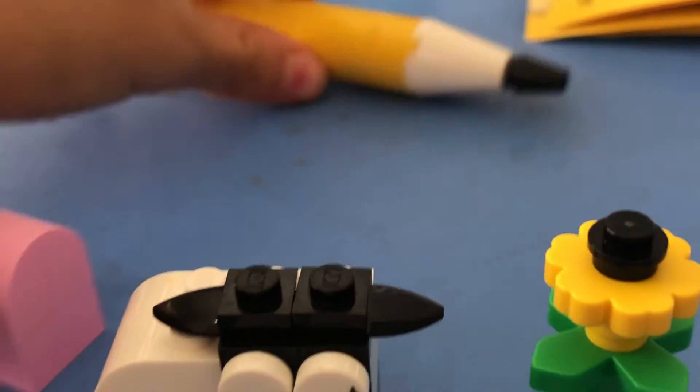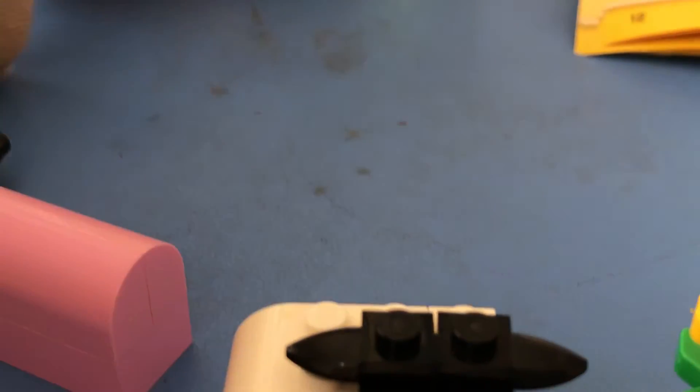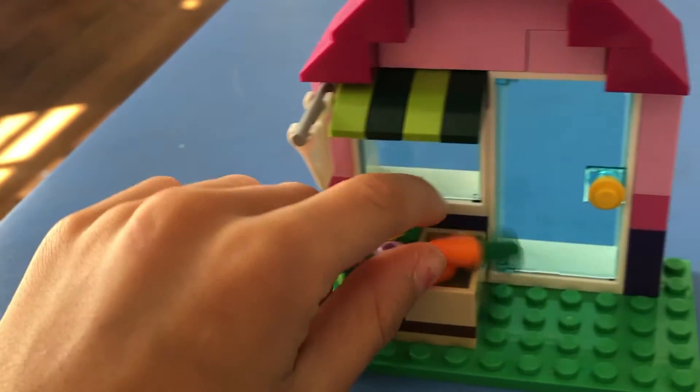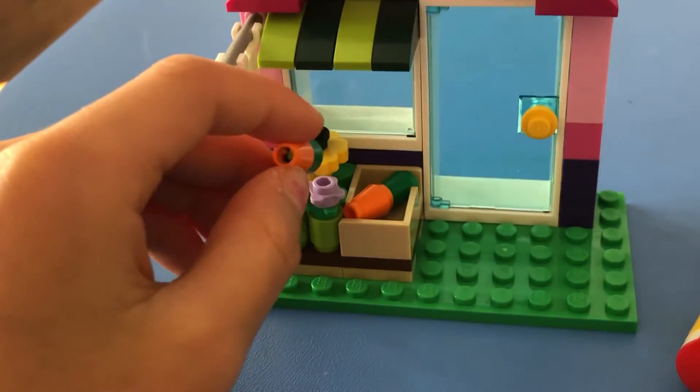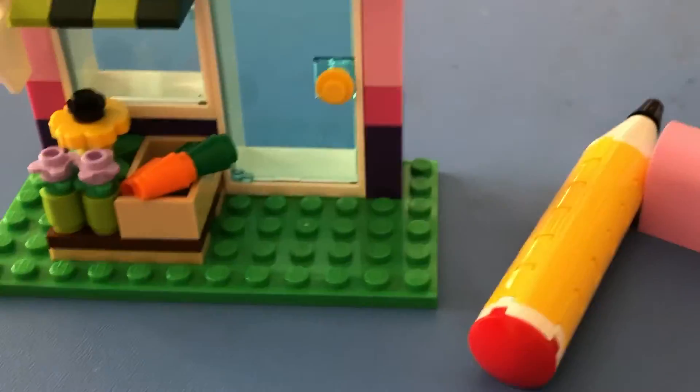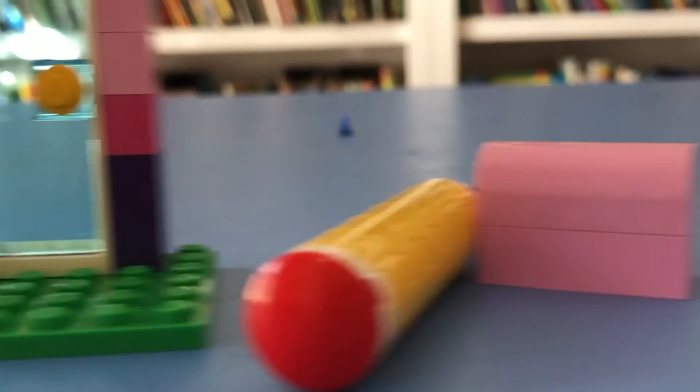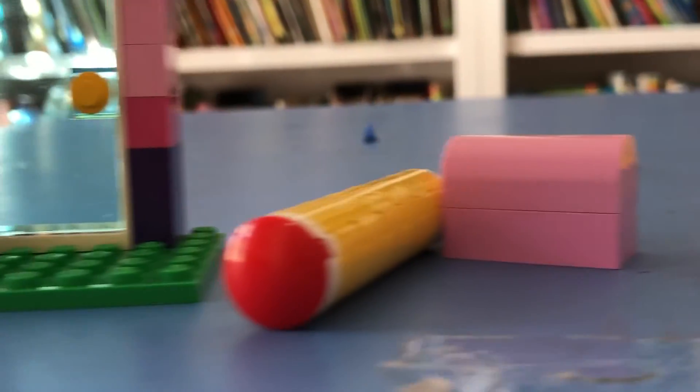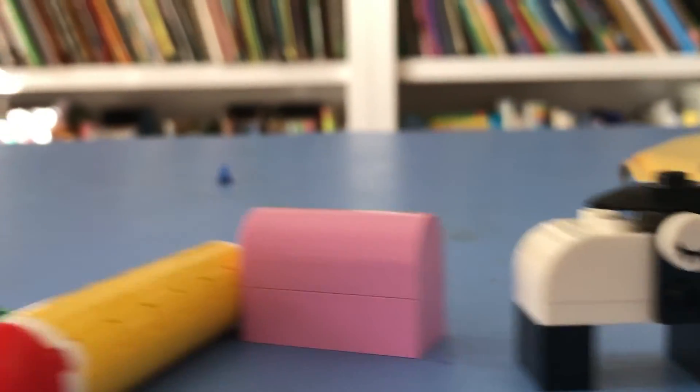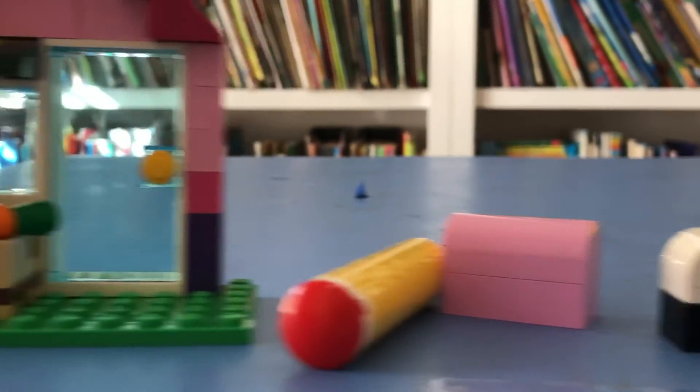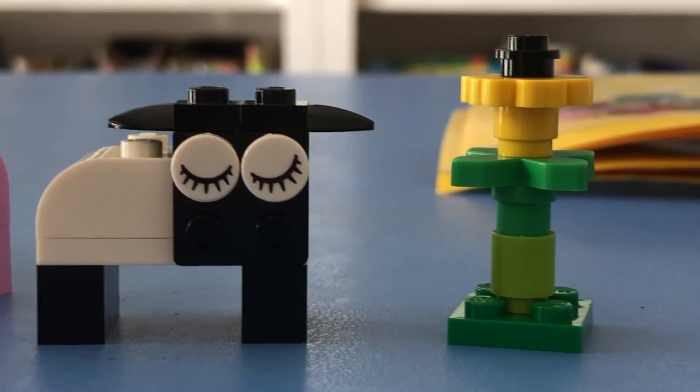So here's the lamb, here is the flower. So again, if you didn't watch our pencil video, how to build it, please watch it. And if you didn't watch the garden house with the carrots, please watch it. I hope you enjoyed this video.